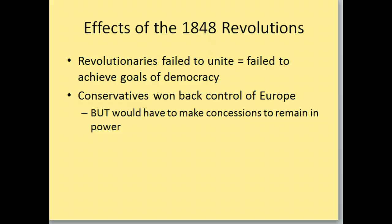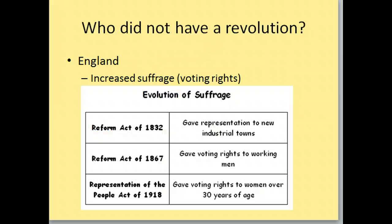Two countries did not have revolutions. The first one is England. They did not have a revolution because they increased suffrage — voting rights — so that more people could vote. People who can't vote are generally unhappy; people who can vote are generally happy because they have a say in the government. The first Reform Act gave representation to the new industrial towns forming because of the Industrial Revolution. About thirty years later, voting rights were given to working men — so all working men can vote.